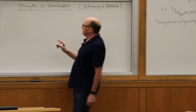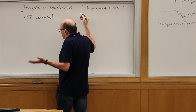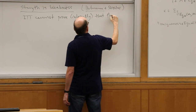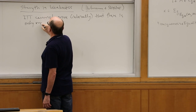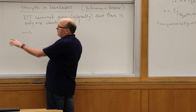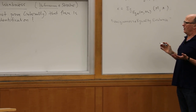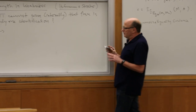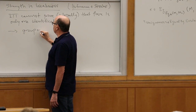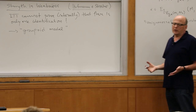Because of the strength in weakness: ITT cannot prove internally that there's only one identification — only one element of an identity proof. You might think I can add funext and then prove that anything in the identity type is equal to star, and therefore funext would have to equal star — which is completely insane. But the thing is, ITT can't do it. This is demonstrated by something called a groupoid model.